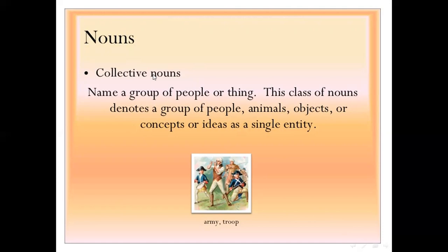Another type is the collective noun, which names a group of people or things. This class of nouns denotes a group of people, animals, objects, or concepts as a single entity. For example, if I say 'Class 4B,' it means all the students of Class 4B are included in just one word — 4B. When we use one name for a group of people or things, that is a collective noun.